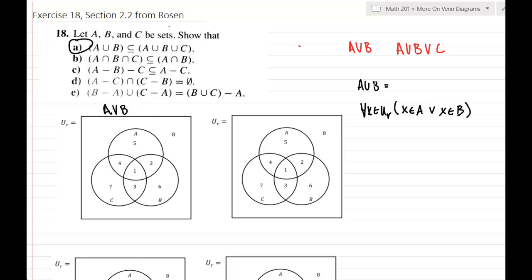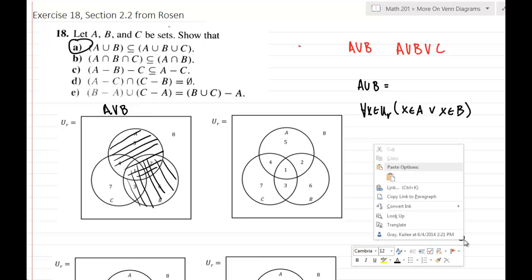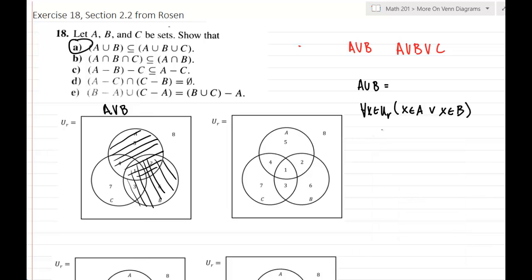A union B, I'm just going to write the logical definition here. For any element that I pick in that universal set, if I'm saying A union B, that means X has to be in A or X has to be in B. If you think about the or operator, that's true when one or the other or both is true. The only time it's false is if it's false in both pieces.